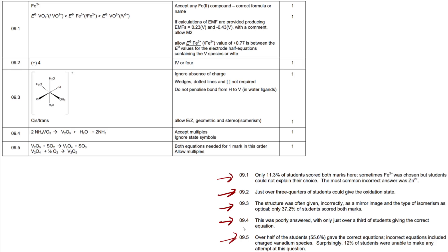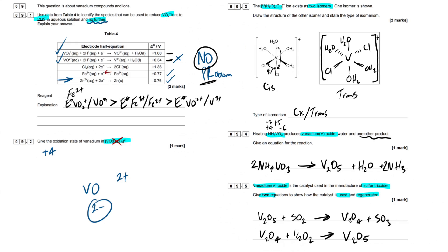Next point here, 9.5. Over half of the students gave the correct equations. Incorrect equations included charged vanadium species. Surprisingly, 12% of students were unable to make any attempt. So I assume they just got to the end of the paper. Question 9 right near the end and they were just like, you know what, I don't remember it. I'm just going to come back to it and they possibly forgot. Again, one marker, not the end of the world here. But like I said, flashcards are your friend for this. So do your best just to memorize all the equations, all of the color changes, all that good stuff. Hopefully this was helpful. If it was, drop me a like. Subscribe for future science and maths content. Really helps the channel grow. Best of luck guys in your exams. Peace.